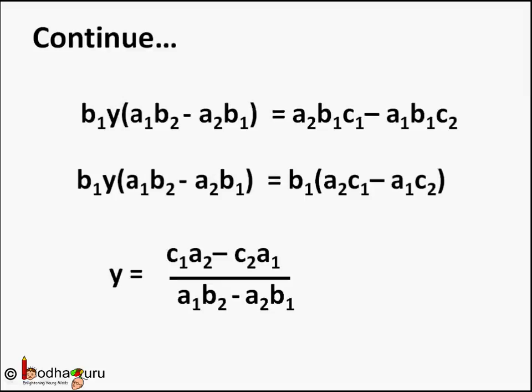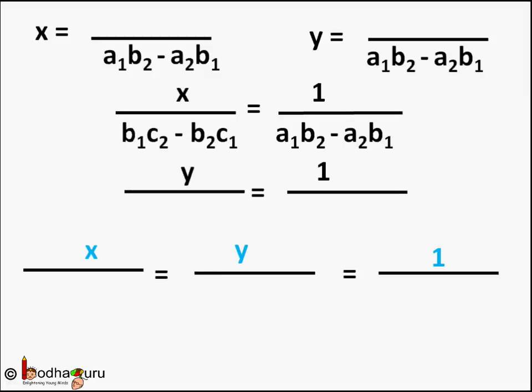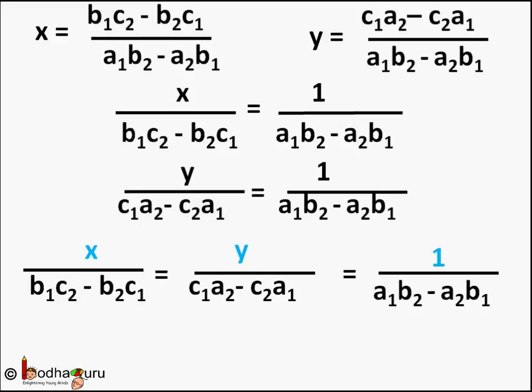So this way we can find the value of both X and Y directly from the coefficients themselves. Now you must be wondering these values are really hard to remember. X equals (B1C2 minus B2C1) divided by (A1B2 minus A2B1), and Y equals (C1A2 minus C2A1) divided by (A1B2 minus A2B1). We can write this as: X divided by (B1C2 minus B2C1) equals Y divided by (C1A2 minus C2A1) equals 1 divided by (A1B2 minus A2B1).